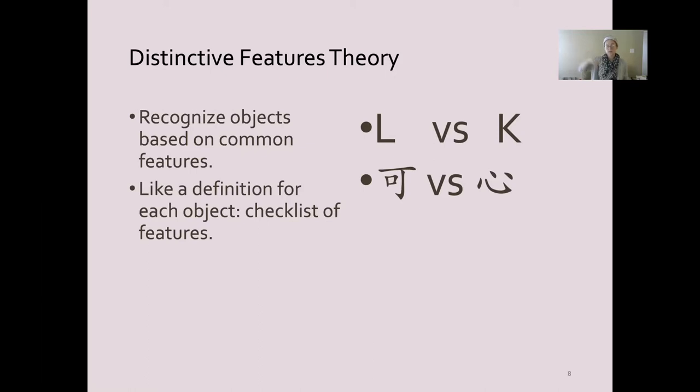Those might be features that are checked. When I go through and try to recognize this letter, if I want to figure out whether it's an L, this theory is saying that unconsciously I'm going through my checklist and saying, does it have that vertical line on the left? Check. Does it have that horizontal line on the bottom? Check. Are they meeting at a right angle? Check.